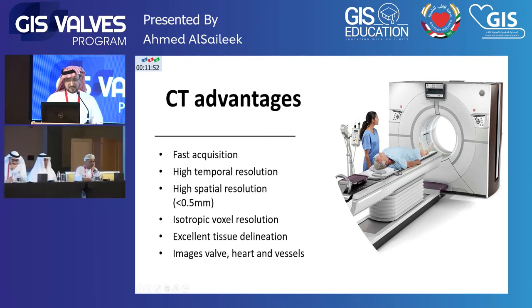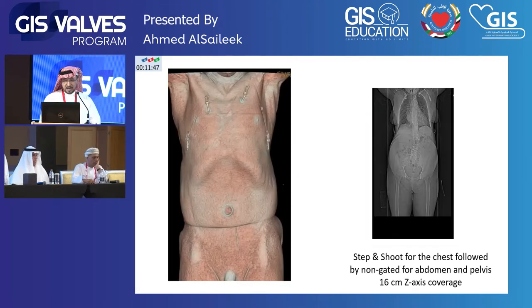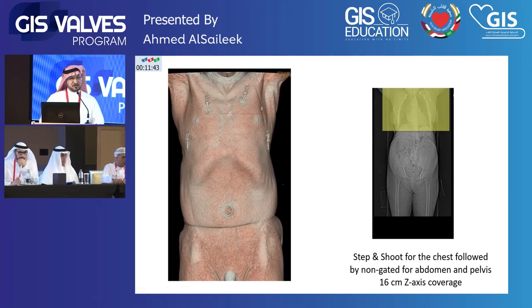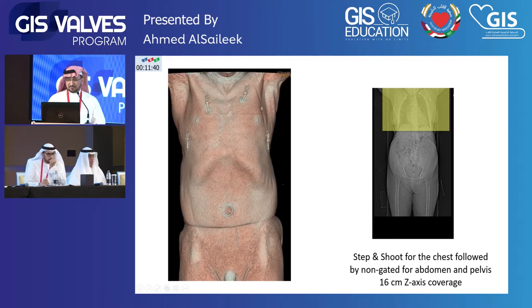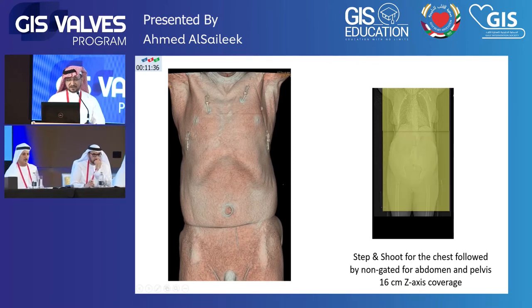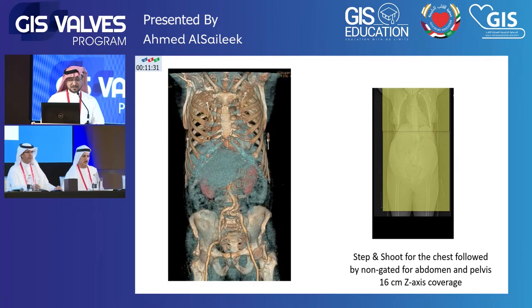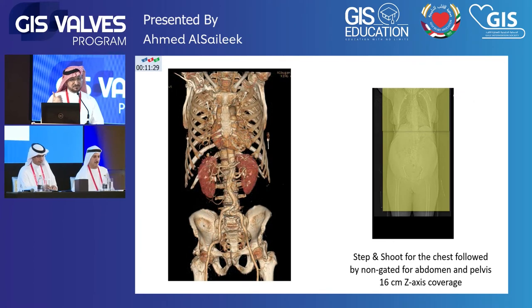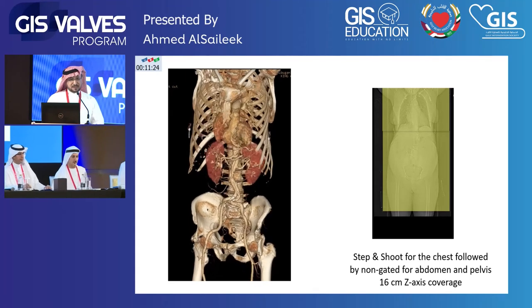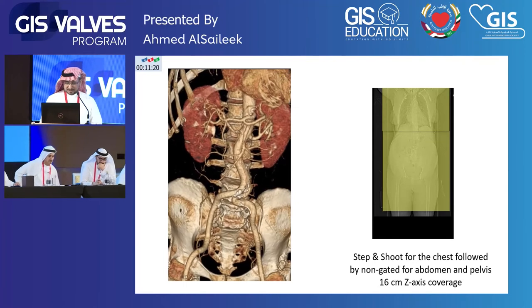CT provides excellent tissue delineation and can image the valve, heart, and vessels. Our protocol involves one acquisition, one contrast injection — gated images for the heart and non-gated for the rest. We get beautiful images starting from the skin in a single acquisition, with 50 cc contrast, no preparation, no breath hold — good image quality in less than a minute.